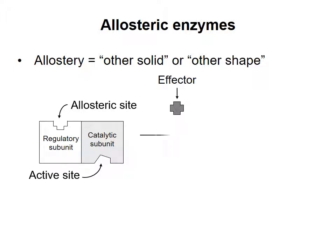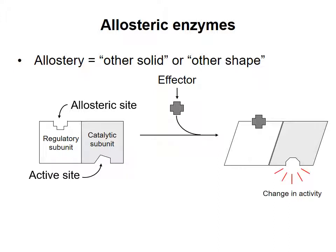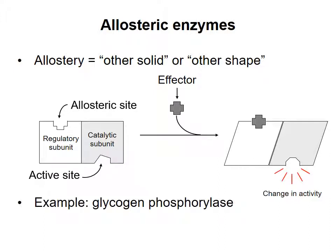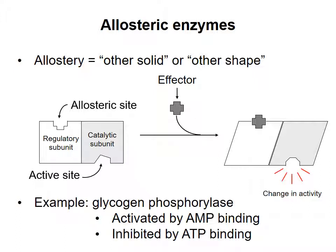Binding of the effector to the allosteric site causes changes in the conformation or shape of the enzyme, in particular at its active site, that increase or decrease its activity. A given effector will have a particular effect on a given enzyme. For example, glycogen phosphorylase is an enzyme that breaks down glycogen by removing one glucose monomer at a time. Binding adenosine monophosphate (AMP) at the allosteric site favors an enzyme conformation with high activity, while binding adenosine triphosphate (ATP) at the allosteric site favors a conformation with lower enzymatic activity.